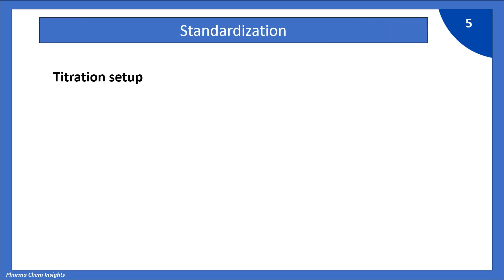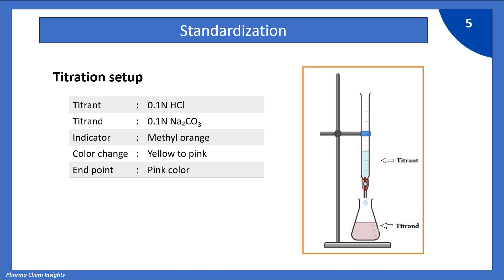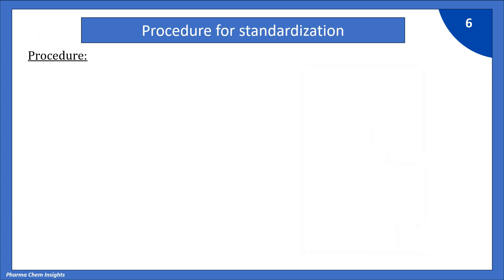Here comes the standardization. Set up your titration apparatus as shown in the diagram. Your titrant is 0.1 normal HCl which is filled in the burette. Titrate is 0.1 normal sodium carbonate solution which is in the conical flask. Indicator is methyl orange. The color change is yellow to pink. You can see the reaction: sodium carbonate plus 2 moles of HCl gives 2 molecules of NaCl plus water plus carbon dioxide.